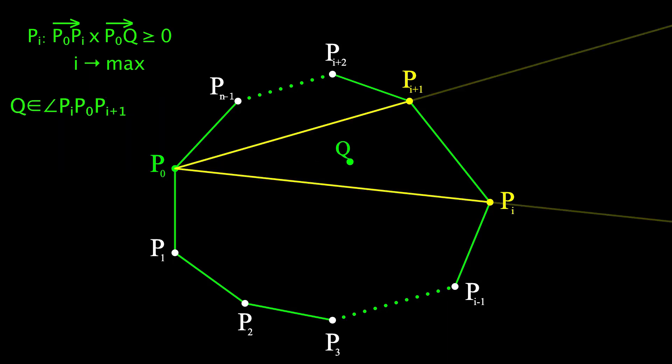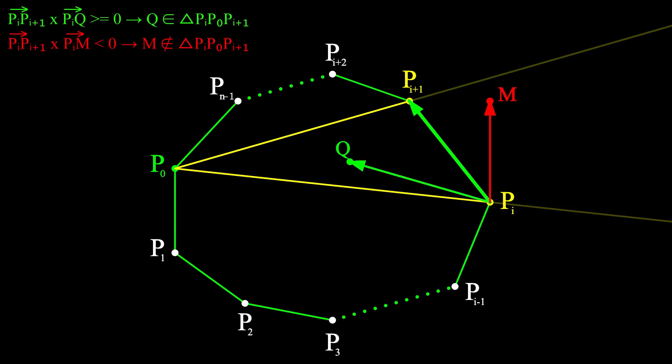After determining i such that the point is inside the sector P₀PᵢPᵢ₊₁, we need to check whether our point is inside the triangle. If it is not inside, then q is on the right side of the vector. Otherwise, our point is inside the triangle, then obviously it is also inside of our polygon.